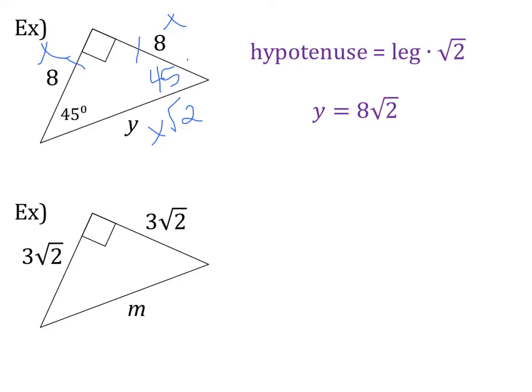So now all I have to do is plug into my formula. So we know that the hypotenuse is always across from the right angle, and so that case it's y, so I plugged in y. And then my leg is 8, so 8 square root of 2. So my final answer is that y equals 8 root 2.